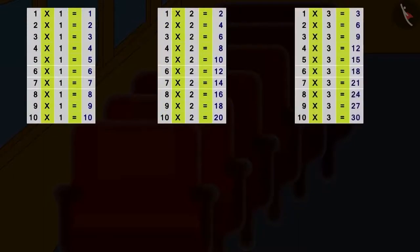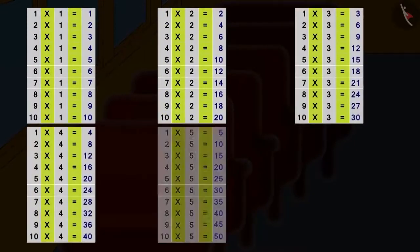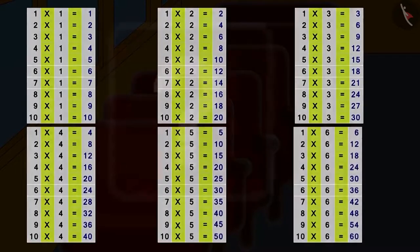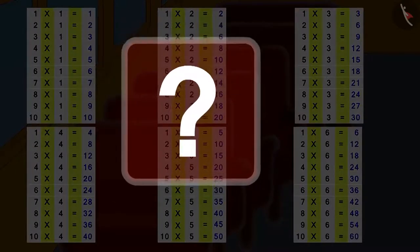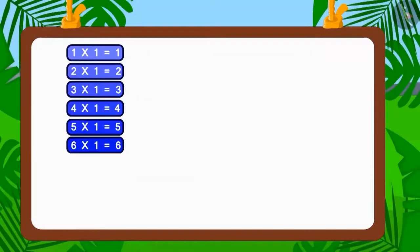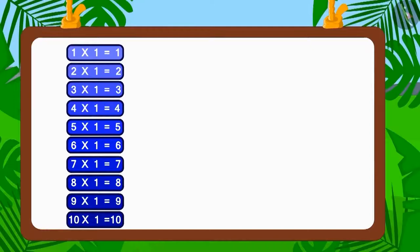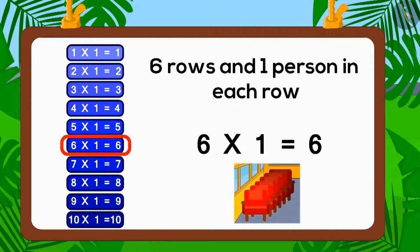Do you want to learn an easy method to find factors? It is very simple. We need to identify the number tables in which the number six appears. Come, let's start with the table of one. Does number six appear in the table of one? Yes, six multiplied by one is six. Therefore, six people can sit in this bus in six rows with one person sitting in each row.